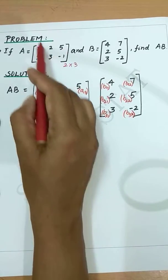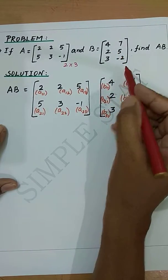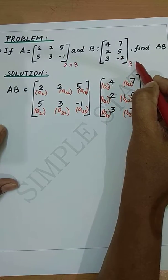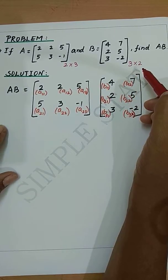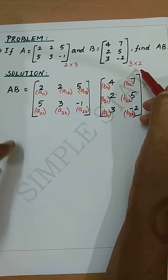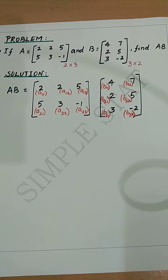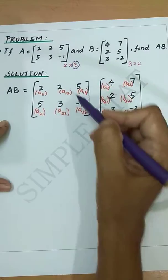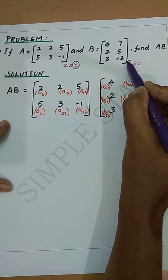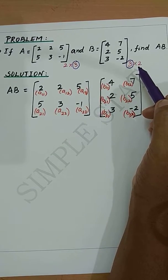B is a matrix of order 3×2, that is B consists of three rows and two columns. Here the number of columns in matrix A equals the number of rows in matrix B. Therefore these two matrices can be multiplied.